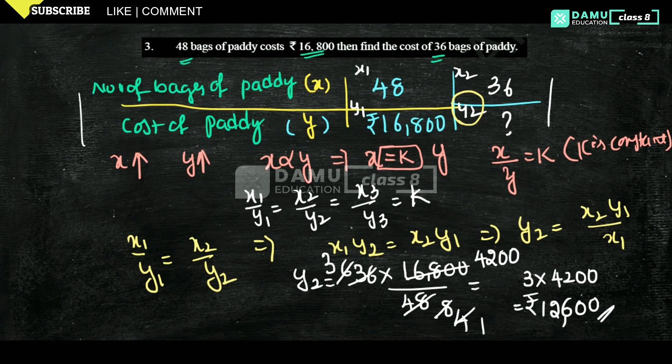The result is 12,600 rupees — that is the cost of 36 bags of paddy.